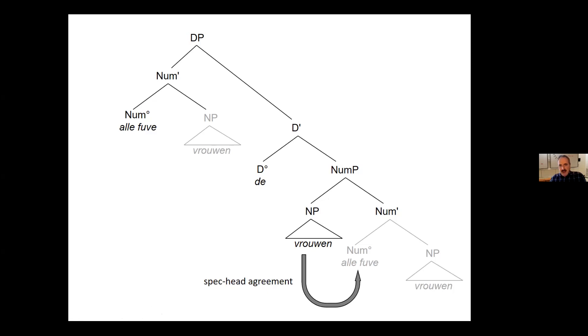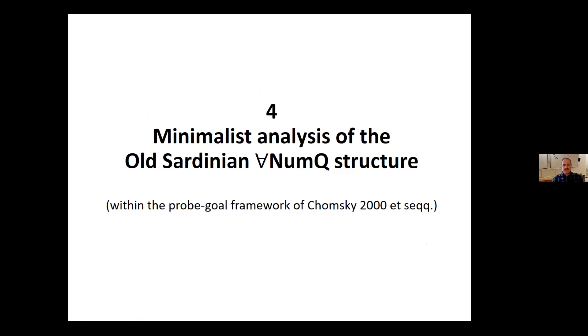And then I think this is problematic. What he does in reality is to move the number bar. So something which is not neither minimal nor maximal. He moves this to the specifier of the DP. Now, well, strangely enough, there is the quantifier, but there is no QP. So I will now try to present another structure within the minimalist program, following Chomsky's probe and goal framework, and try to resolve this issue and apply it to the Old Sardinian data.